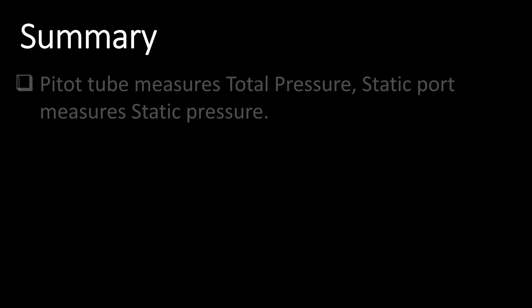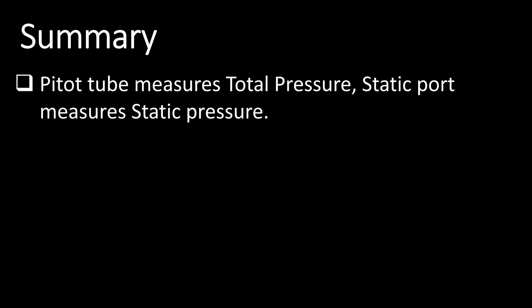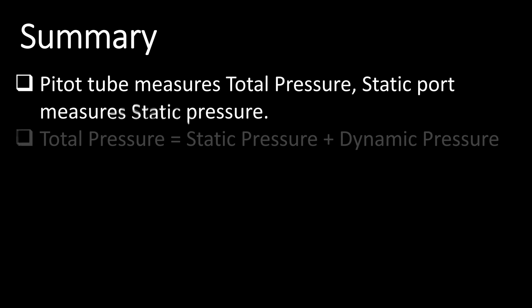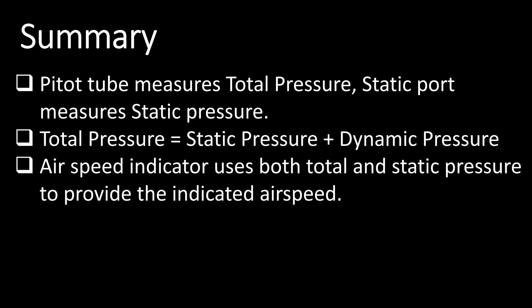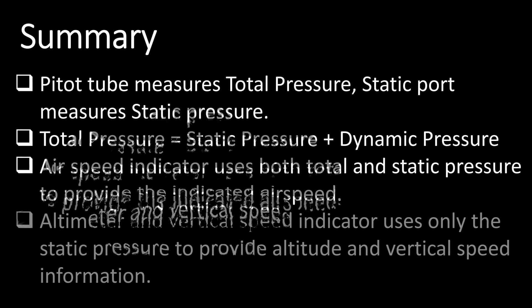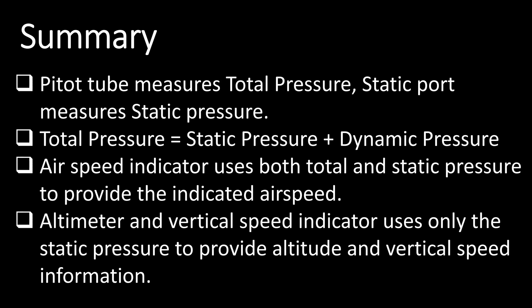To summarize: the pitot tube measures total pressure and the static port measures static pressure. Total pressure equals static pressure plus dynamic pressure, and dynamic pressure is one-half rho v squared. The airspeed indicator, altimeter, and vertical speed indicator all use the pressures measured by the pitot tube and static port. The airspeed indicator uses both, while the altimeter and VSI use only static pressure to provide altitude and vertical speed information to the pilot.